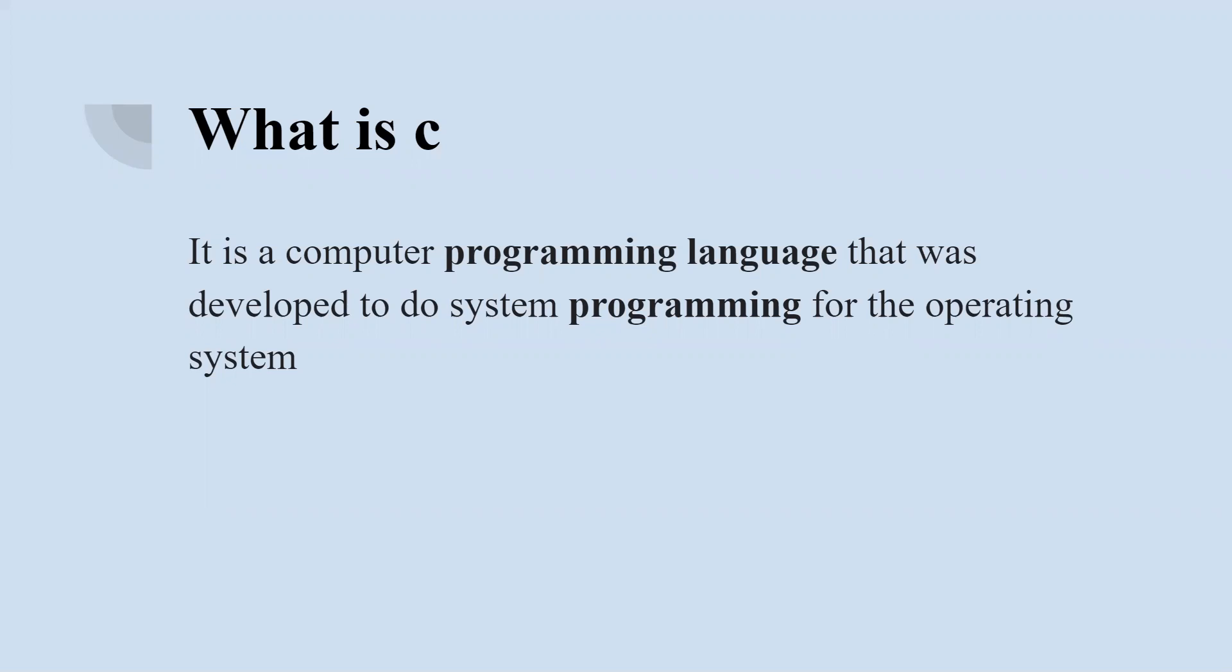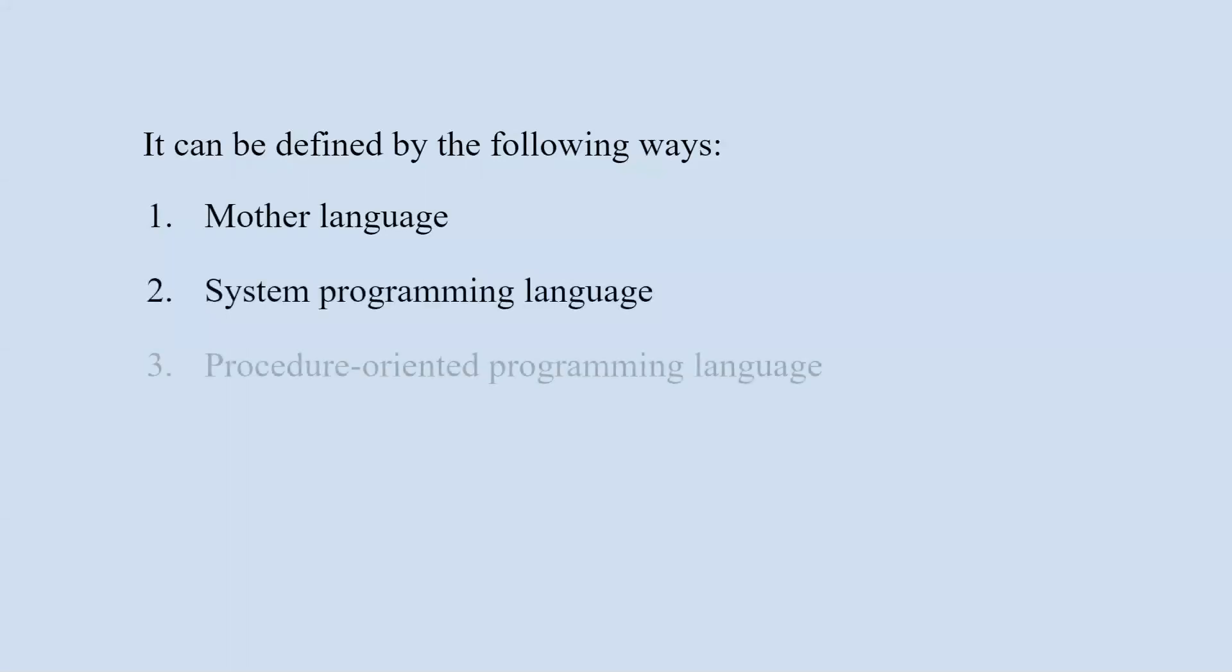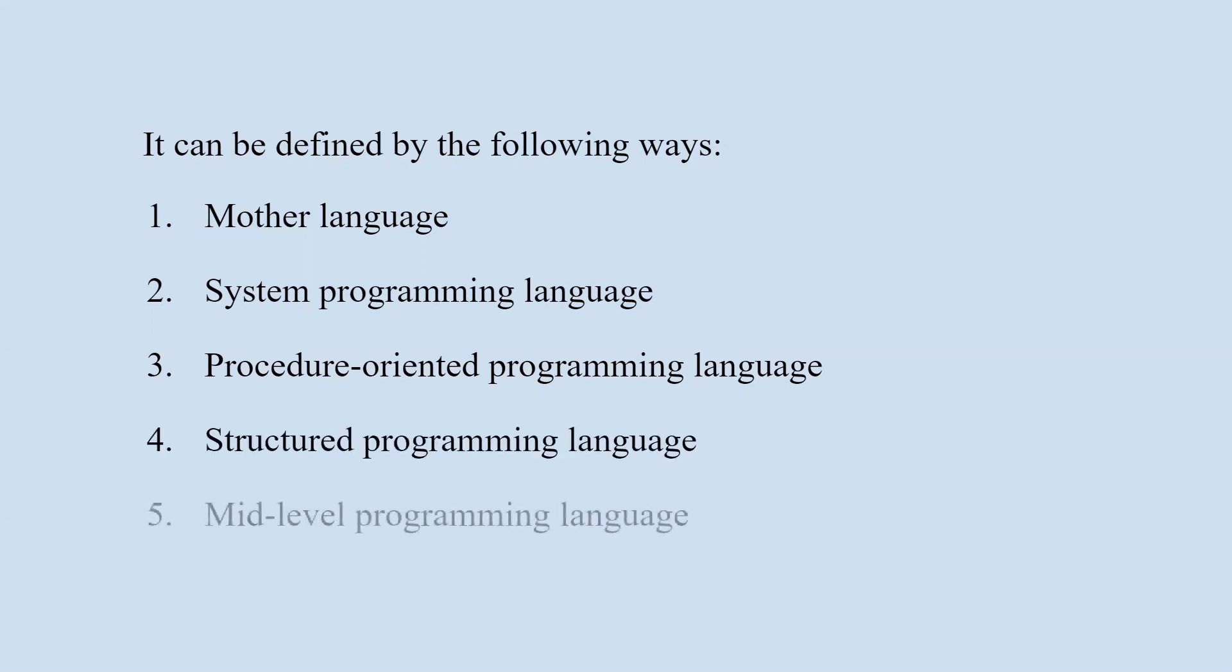C language is defined by several parameters: it is known as a mother language, a structured programming language, a system programming language, a procedural programming language, and a mid-level language.